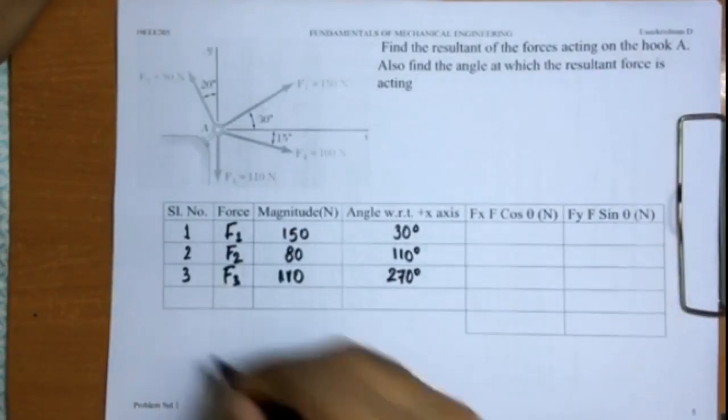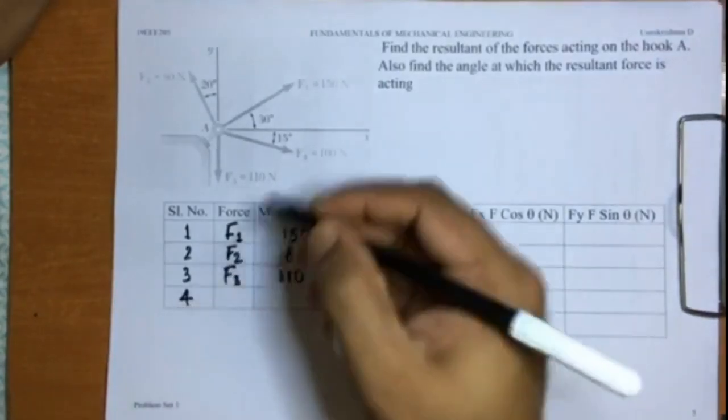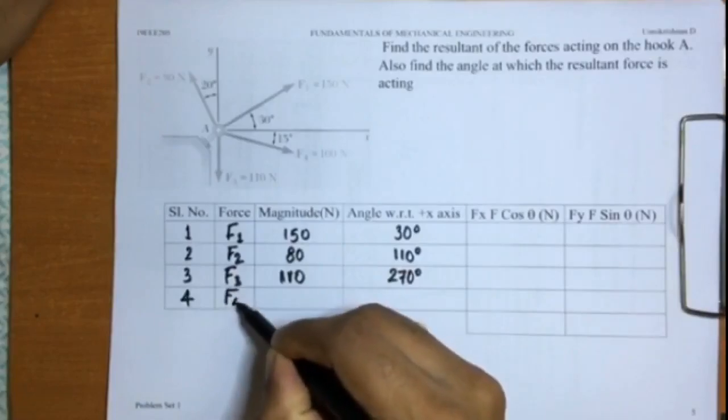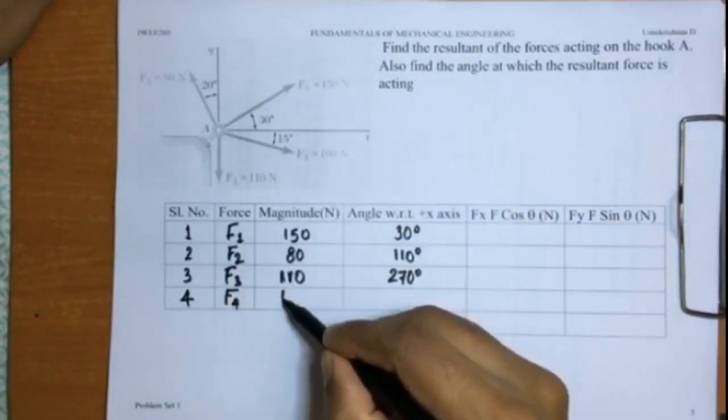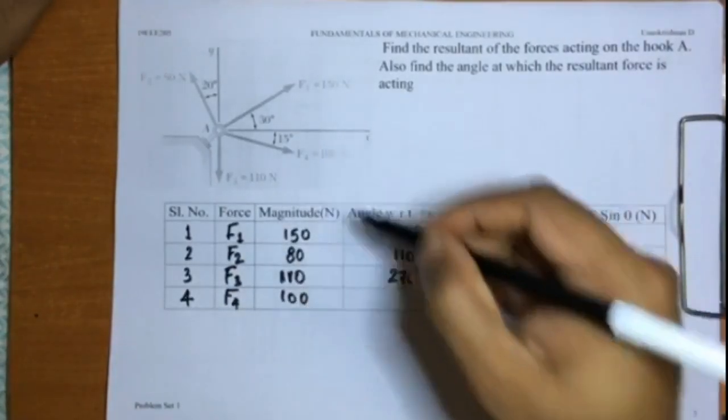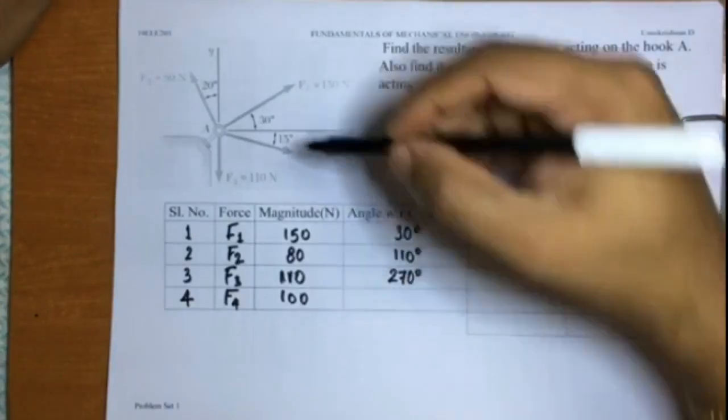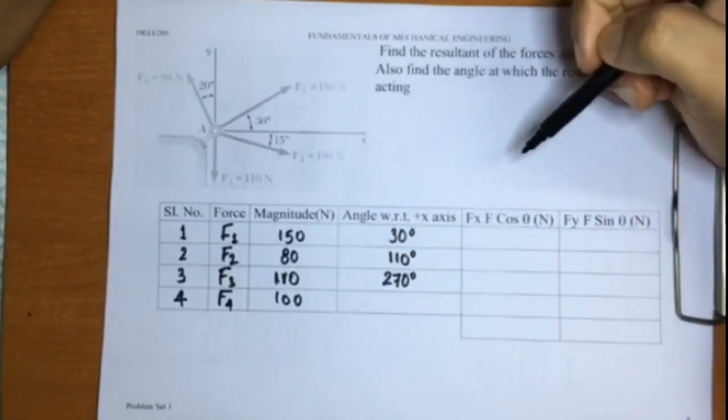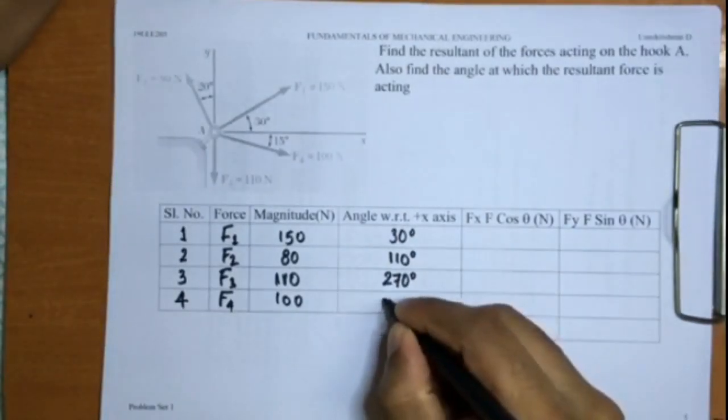Last but not the least, the fourth force F4, which is having a magnitude of 100 newtons, and the angle if you see is 360 minus 15, which is 345 degrees.